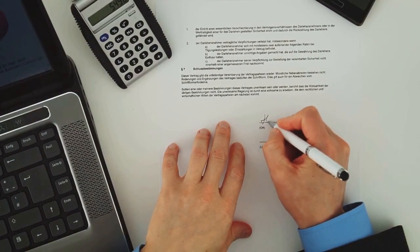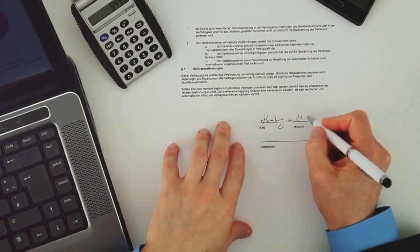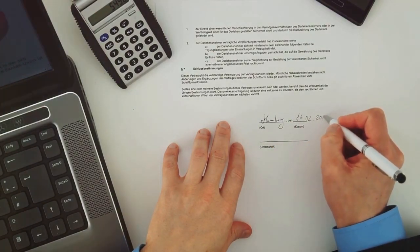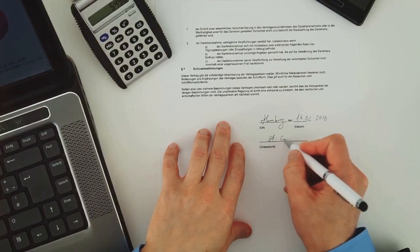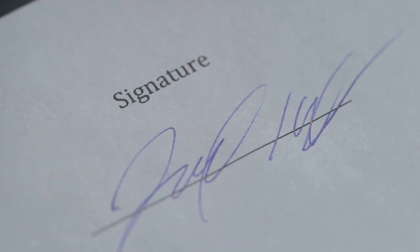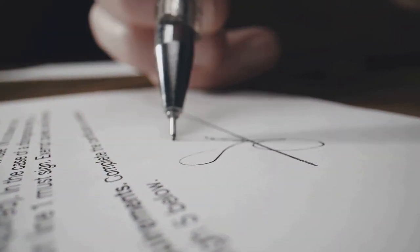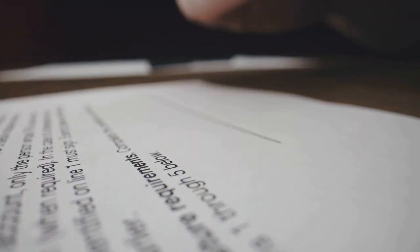For this process, notaries use government-issued identification documents, such as driver's licenses or passports. Next, the notary ensures that the documents are signed voluntarily. This means that each party is acting out of their own free will and isn't under any undue influence or coercion. The notary will typically ask each party if they understand the document and are signing it without any pressure. This step is crucial to protect the rights of all parties involved and to uphold the integrity of the transaction.